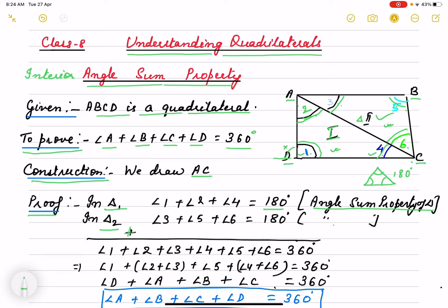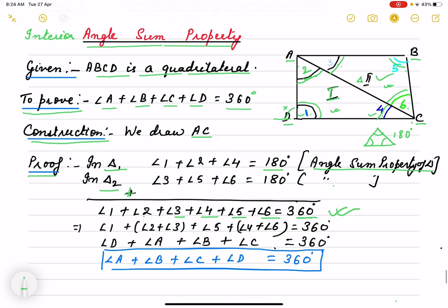If you add, you are getting angle 1 plus angle 2 plus angle 3 plus 4 plus 5 and here 180 plus 180 is 360 degrees. Now, angle 2 plus 3, I am keeping in one bracket. Angle 4 plus 6, I am keeping in one bracket.